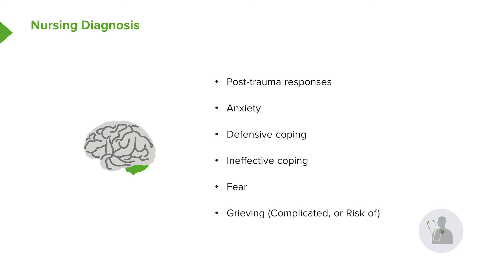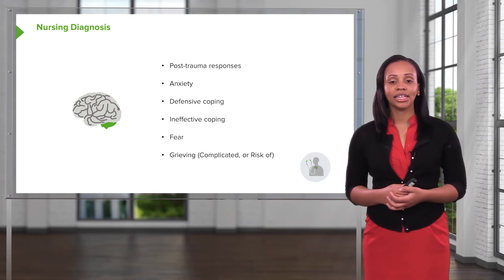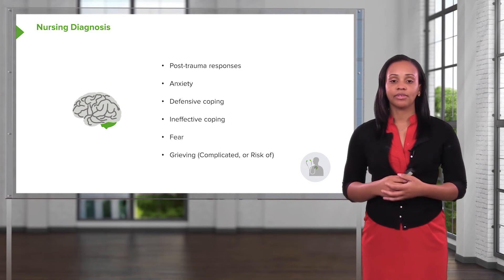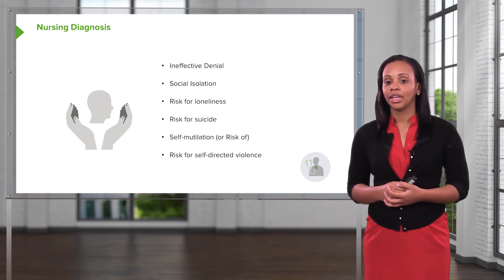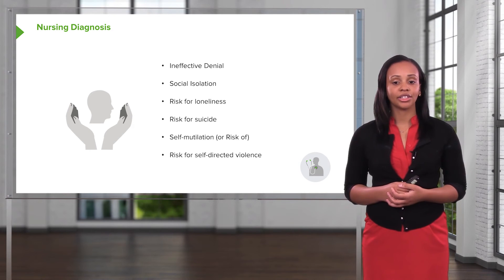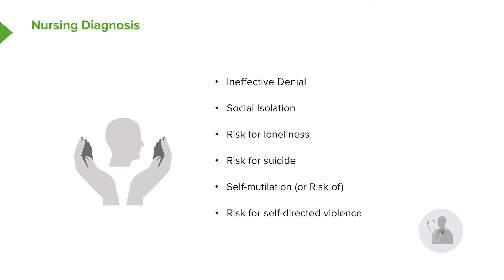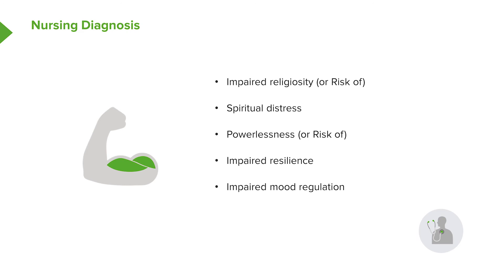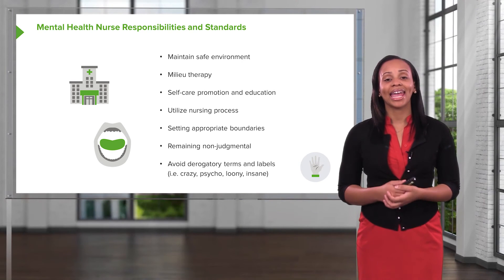Now let's review common nursing diagnoses seen in mental health nursing: post-trauma responses, anxiety, defensive coping, ineffective coping, fear, grieving, complicated grieving or risk of grieving, ineffective denial, social isolation, risk for loneliness due to withdrawal, risk for suicide, self-mutilation or risk thereof, risk for self-directed violence, impaired religiosity or risk of spiritual distress, powerlessness, impaired resilience, and impaired mood regulation.